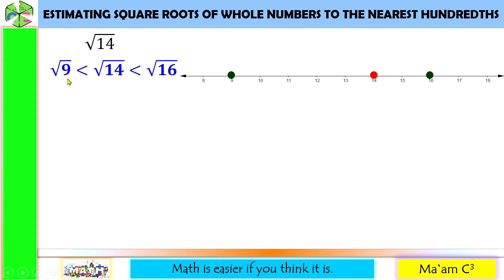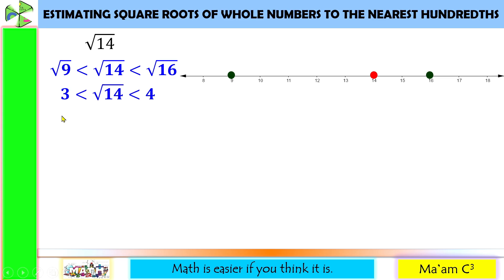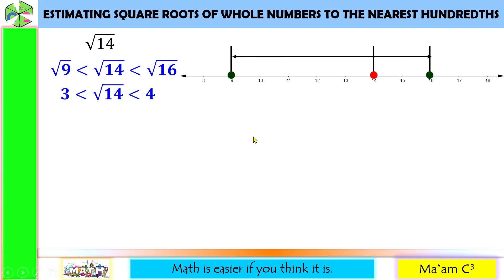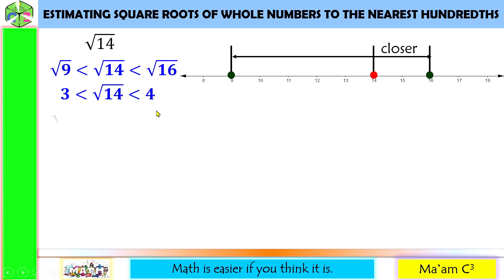The square root of 9 is 3 and the square root of 16 is 4. So the square root of 14 is less than 4 but greater than 3. Now, I'm going to look for the distance of 9 and 16 from 14. From this graph, you will notice that 14 is closer to 16 than to 9, so it means square root of 14 is closer to 4 than to 3.